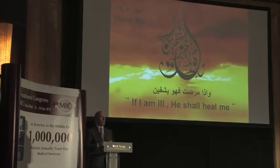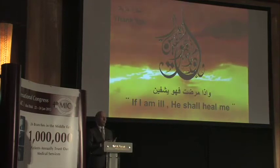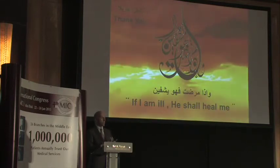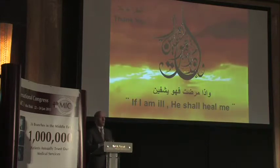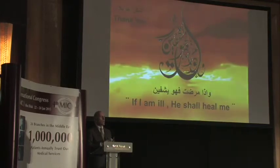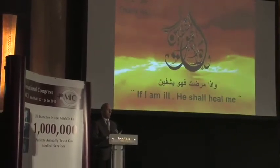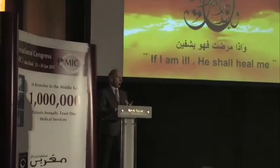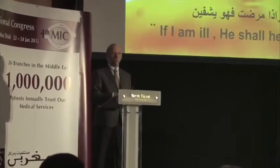As a summary: toric intraocular lenses are my favorite method because of their precision, because I use micro-incision cataract surgery, because I can provide my patients with any correction from 1 diopter to 16 or more in very special cases, and because they are cost-effective. I seldom do relaxing incisions — I do clear corneal opposite incisions up to 1 diopter — and I do not use femtosecond laser-assisted incisional surgery. Thank you very much.